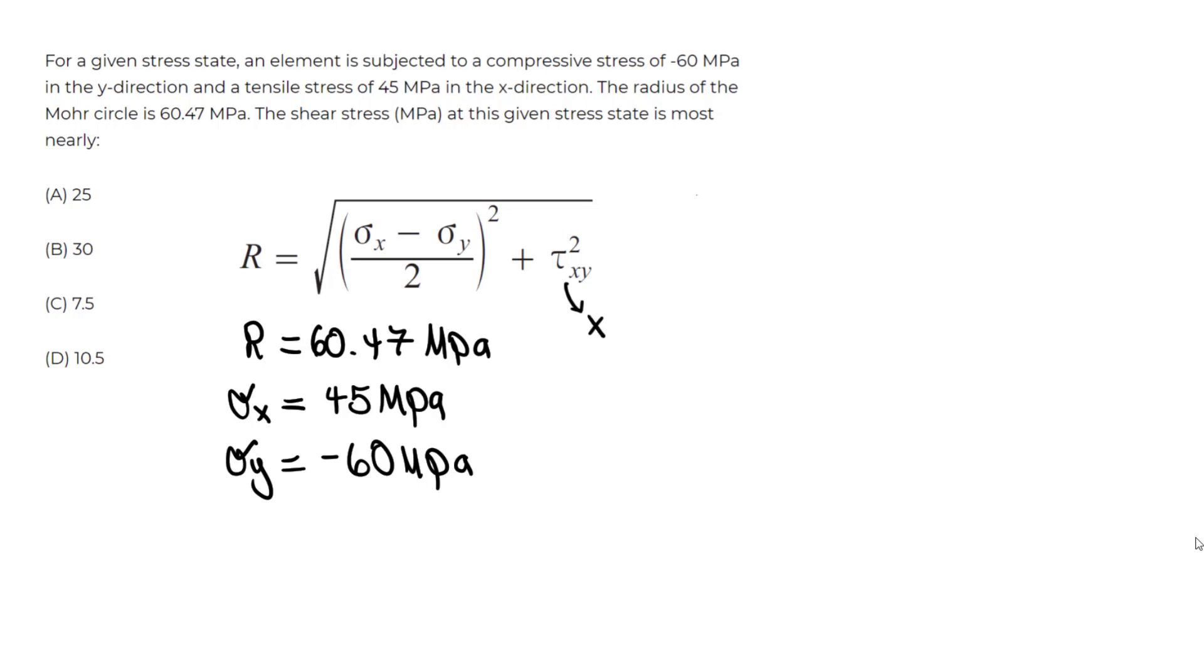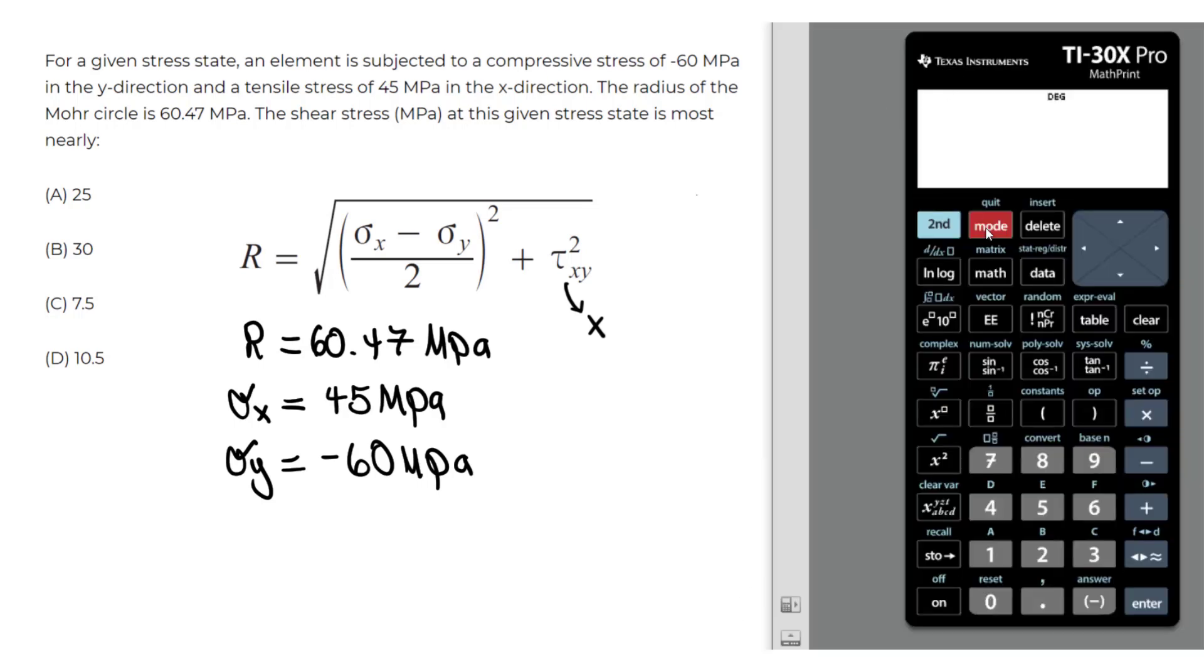So if we do just that, we can go in the calculator and using the TI-36X Pro, we go to 2nd, number solve. On the left side we have R, so respect that equals sign. On the left we only have R, which is 60.47. So let's put that for the left side, 60.47 equals.